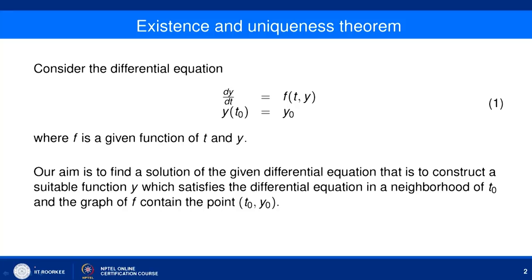Consider the differential equation dy/dt equal to f(t,y) with the initial condition y(t0) equal to y0, where f is a given function of t and y. Our aim is to find a solution — that is, to construct a suitable function y which satisfies the differential equation dy/dt = f(t,y) in a neighbourhood of t0, and whose graph contains the point (t0, y0).